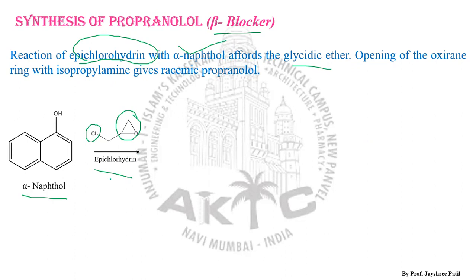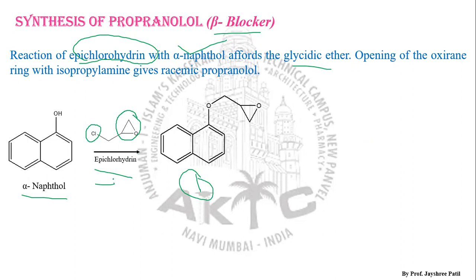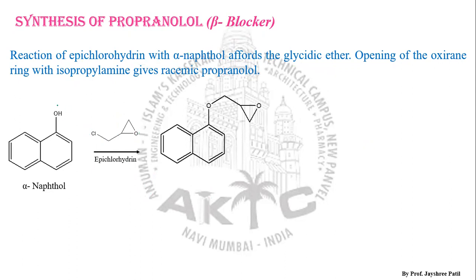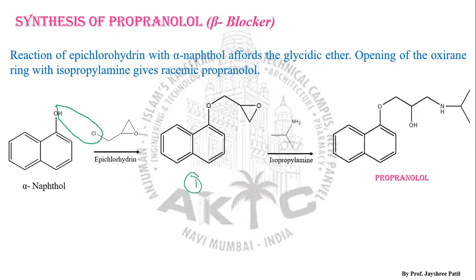Whenever there is a reaction between alpha naphthol and epichlorohydrin, we get structure one. There is a simple loss of HCl — that hydrogen from the naphthol moiety and this Cl. When there is interaction between these two moieties, there is loss of HCl and we get structure one.